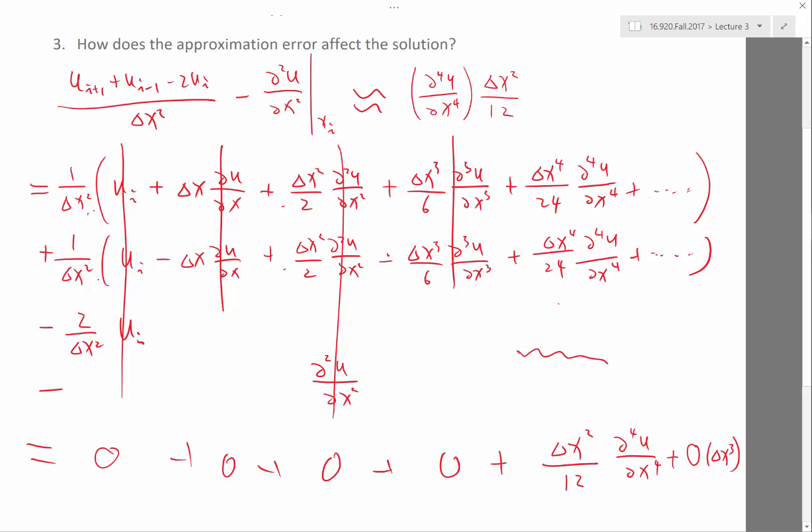Because delta x is decreased by a factor of 10, so delta x squared is decreased by a factor of 100. That's a very nice property to have in 1D, but almost a necessary property to have if you go to 2D and 3D, especially 3D.